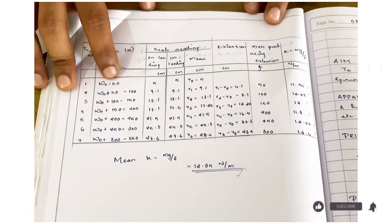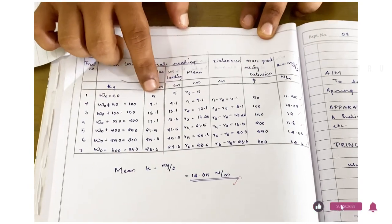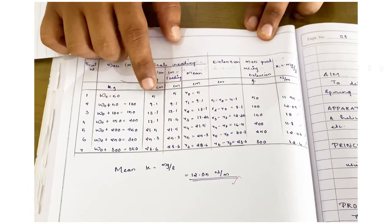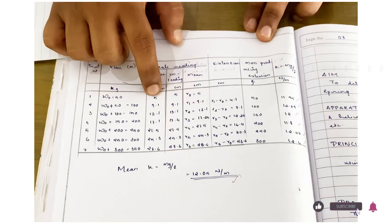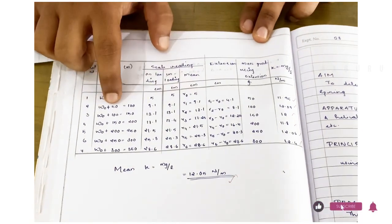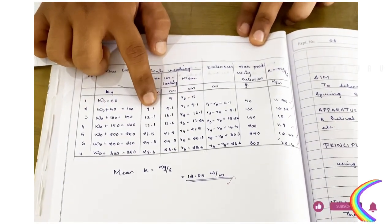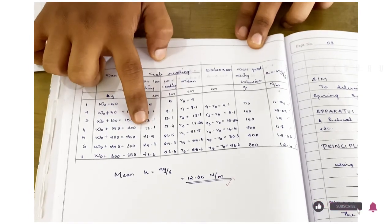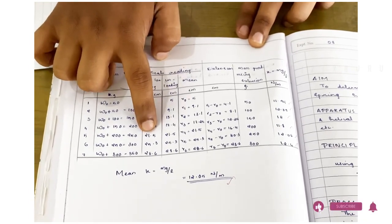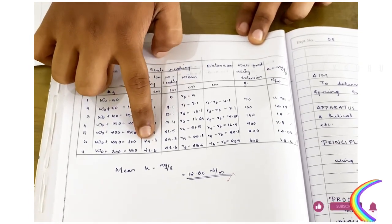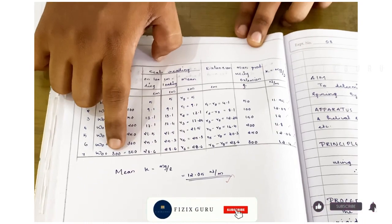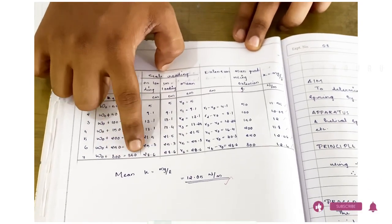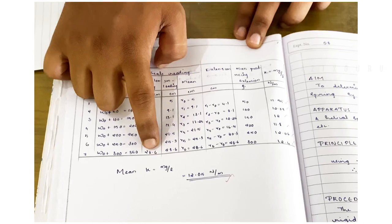The initial end position is a hook. When you put the scale reading with no extra load it is 5 cm. Adding 50g gives 9.1 cm; adding 100g gives 13.1 cm; adding 150g gives 17.1 cm; adding 200g gives 21.5 cm; adding 250g gives 25.3 cm; and adding 300g gives 28.6 cm.